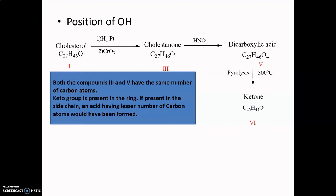Since the keto compound and the dicarboxylic acid have the same number of carbon atoms, we conclude the keto group is present in a ring. The OH group is therefore in a ring, not on a side chain. If it were on the side chain, oxidation would yield a carboxylic acid with fewer carbon atoms, but here we get a dicarboxylic acid with the same number of carbon atoms.